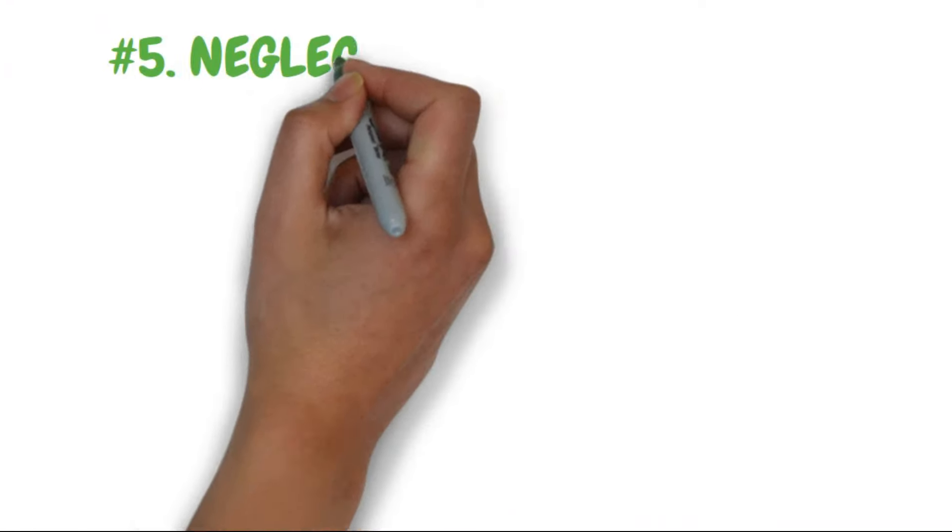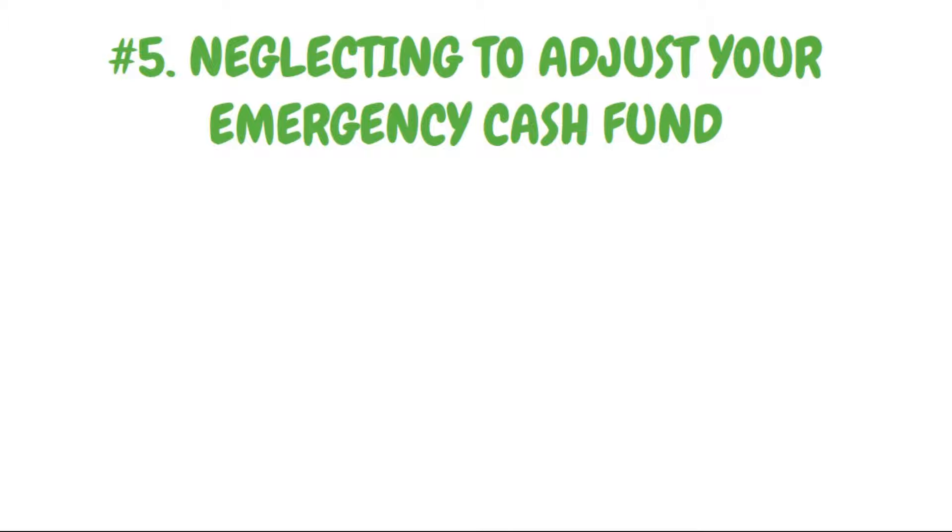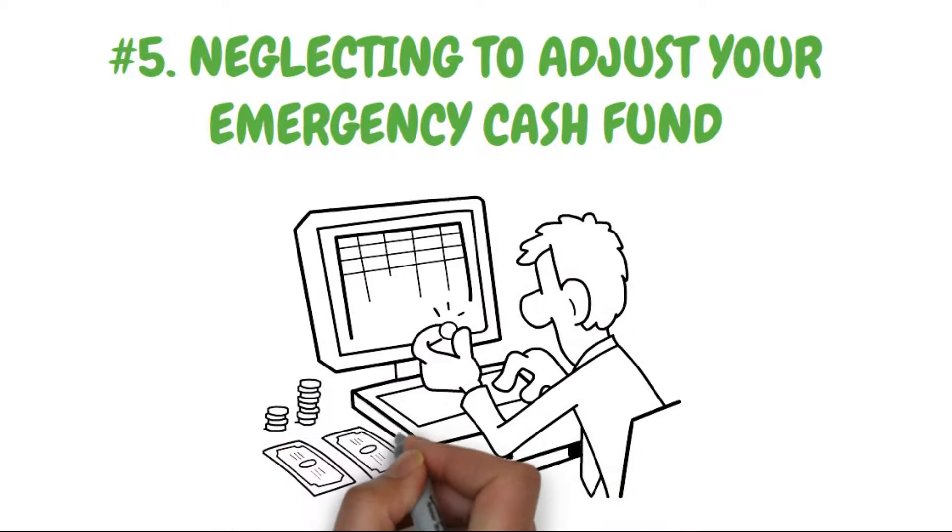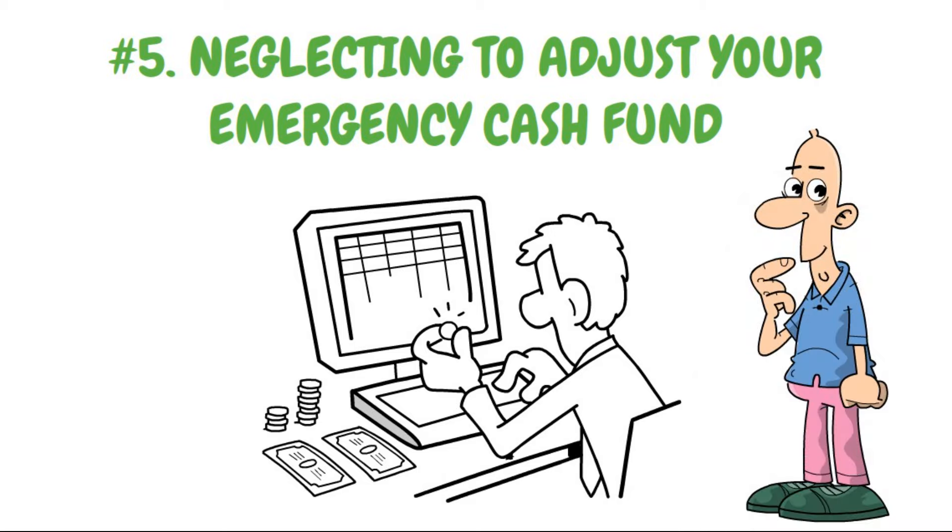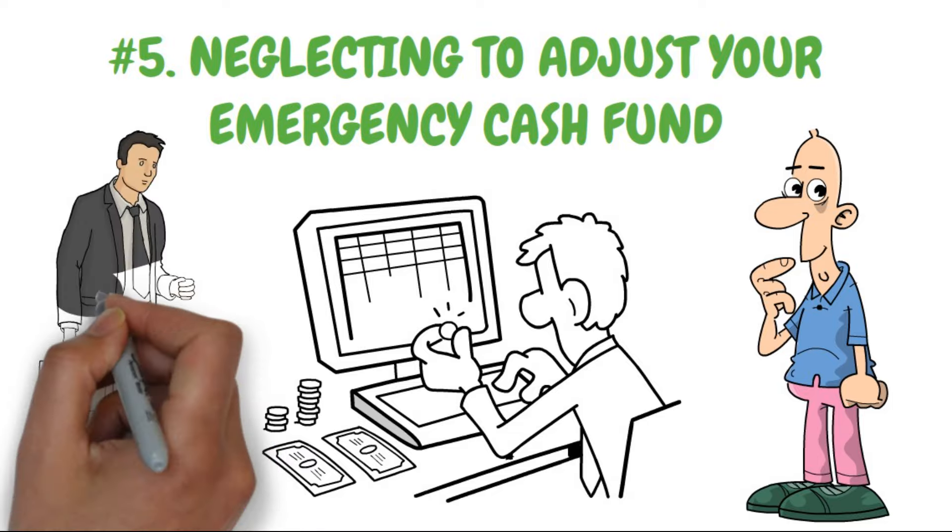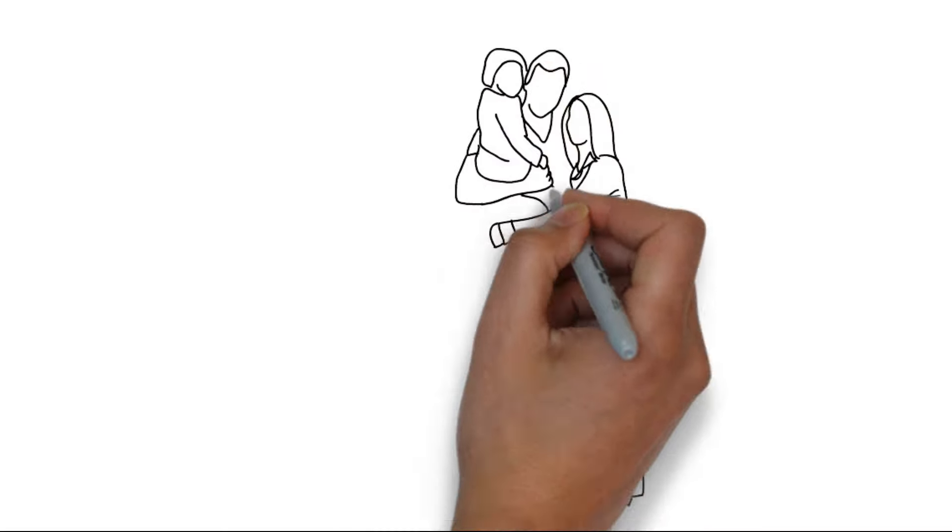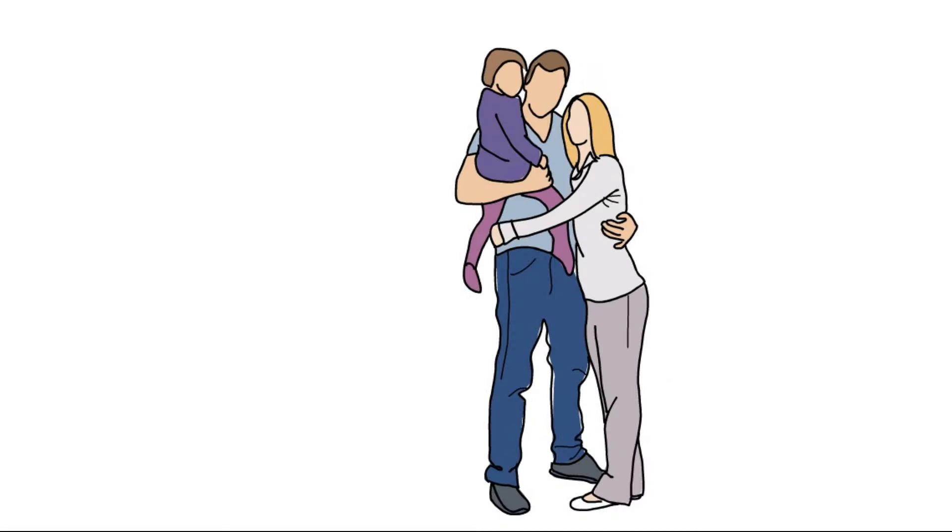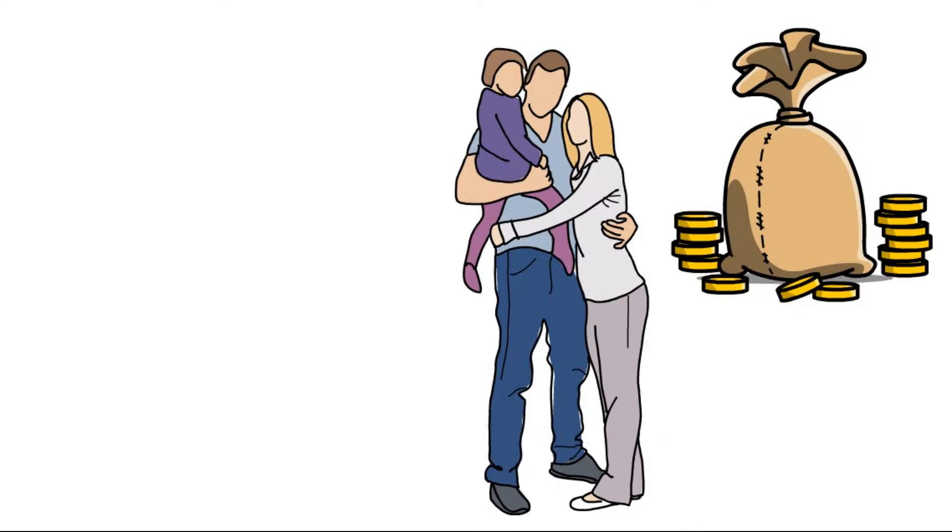Number 5. Neglecting to adjust your emergency cash fund. It may be time to reassess your approach to maintaining an emergency cash fund given your current life circumstances. When you're in your 20s, you can manage with a smaller sum of money. However, as you enter your 40s and 50s, it's common to have extra financial obligations like a mortgage and the responsibility of supporting a family. It is important to carefully consider and make adjustments to the amount of reserves you maintain in your fund.